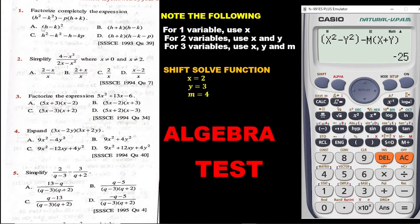The question is: which of the options A, B, C, and D, when we put 2, 3, and 4 in, gives us the same answer? Note this answer down. The next step is to enter the options one by one on the calculator, replacing X with 2, Y with 3, and M with 4 into each possible answer. The one that gives you negative 25 is the correct answer.